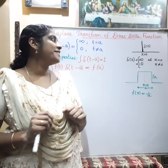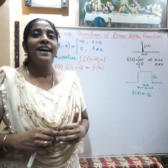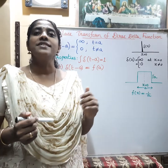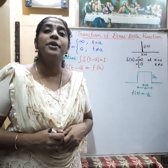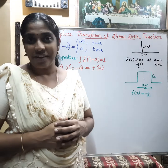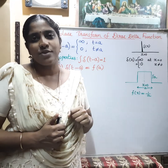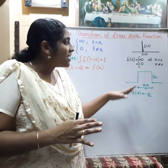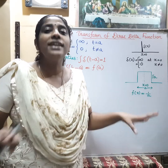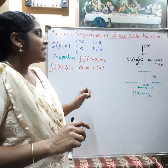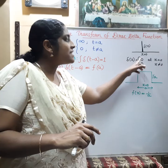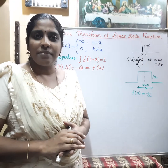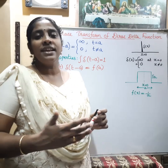Today we will see the Laplace transform of the Dirac delta function. This Dirac delta function was introduced by the famous physicist P.A.M. Dirac, who contributed much to the development of quantum mechanics. Physics students use this Dirac delta function many times. The physical significance of this Dirac delta function is that it can be visualized as a very short pulse — it is infinity at one value and zero at all other values. We can define delta(x) as infinity at x=0 and zero for x not equal to zero.